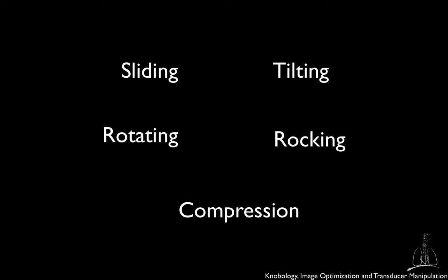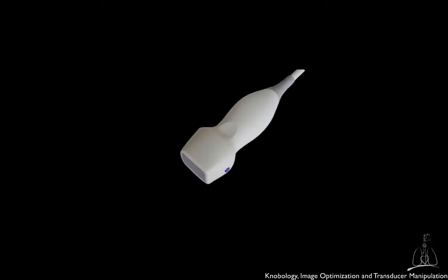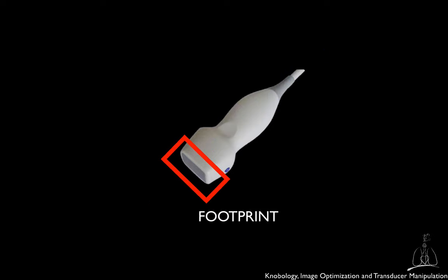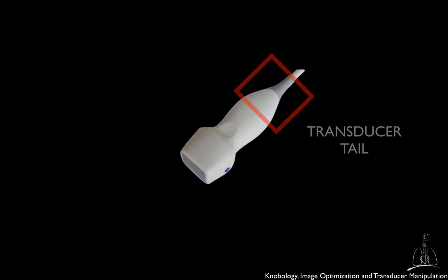To correctly describe and understand these movements, we will refer to the following key components of an ultrasound transducer: the marker, the main axis, the footprint or shape of the transducer, and the tail or posterior part of the transducer.